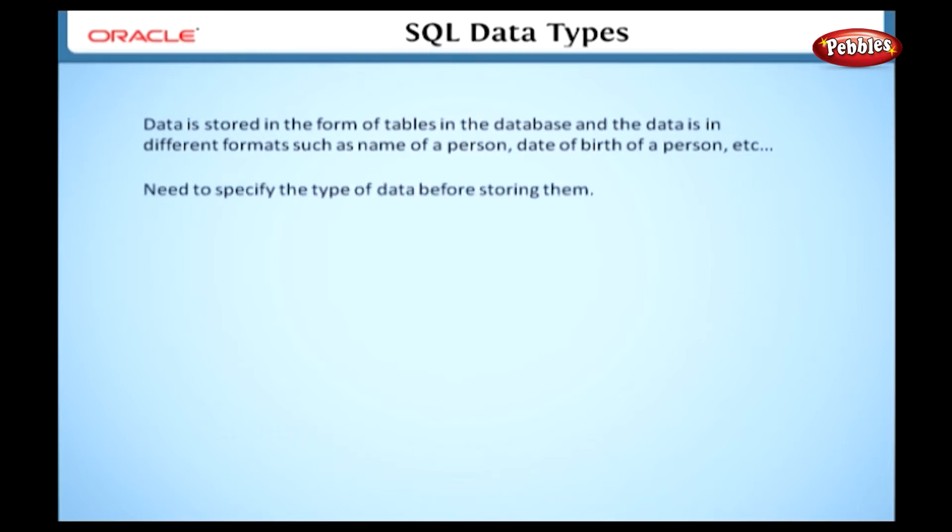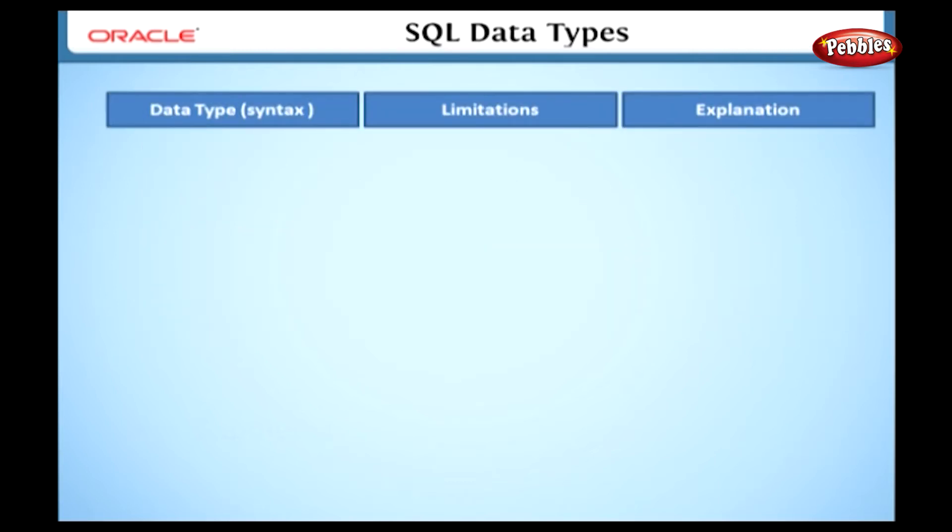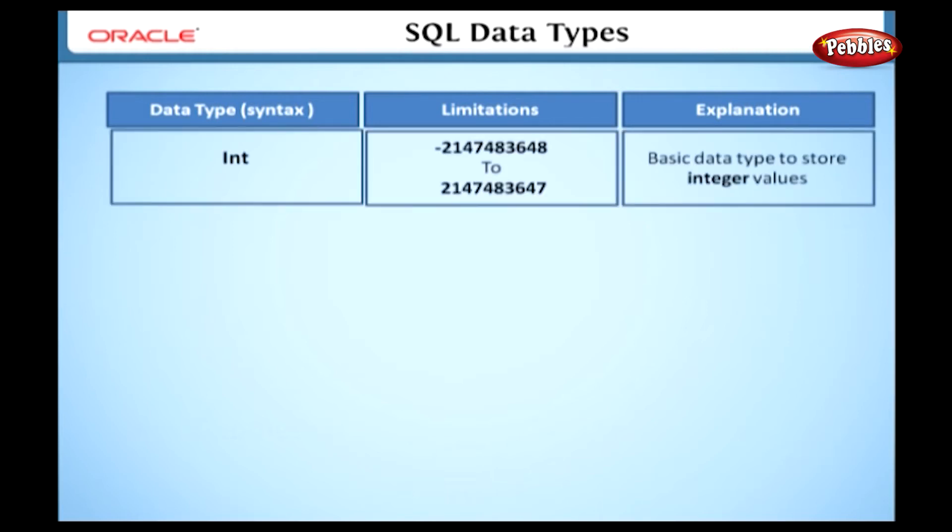So we need to specify the type of data before storing it. So we need to know about the different data types. Here is the meaning of data type: Data type is used to indicate the type of information in the database columns. Here is the list of different data types supported by Oracle 10g.